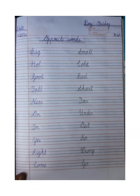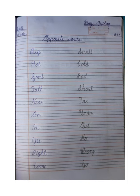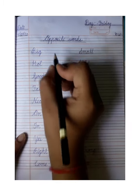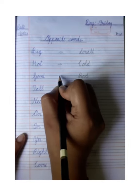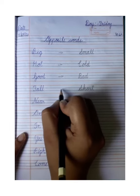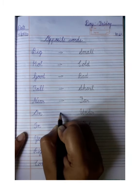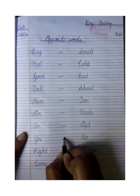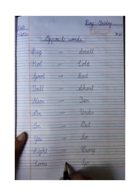You will do this assignment same like this. Firstly mention the date, day as W, then heading — opposite words. Then write the opposites: big–small, hot–cold, good–bad, tall–short, near–far, on–under, in–out, yes–no, right–wrong, and come–go.